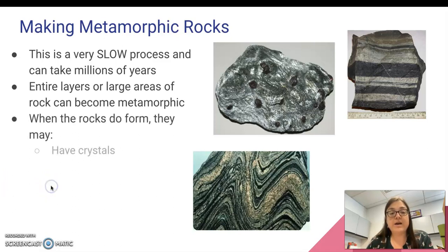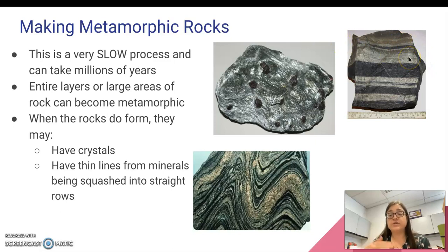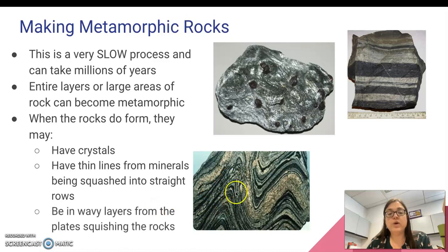When the rocks do form, they may have crystals or gems, like you can see in this one right here. This is a schist with some garnets in it. They might have thin lines, where you can see that there are lines of minerals that have been squashed into straight rows. Or you can end up with wavy layers from the plates squishing the rocks, so what were straight lines are now in these wavy formations.